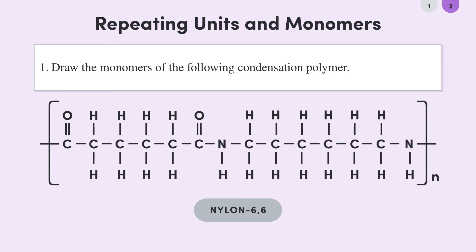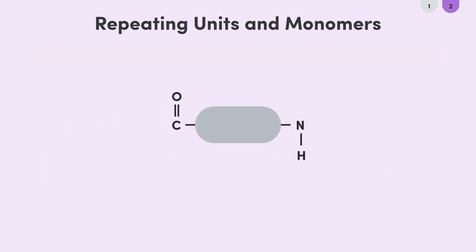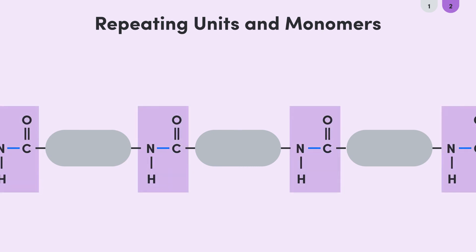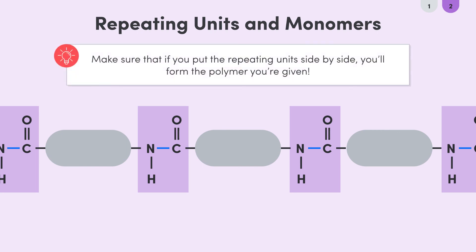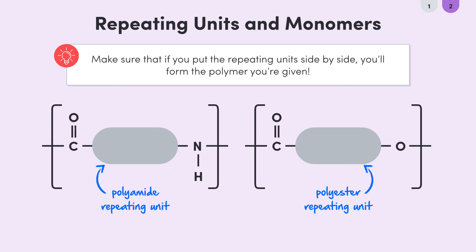Notice here that on one end of the repeating unit, we've got a CO carbonyl group, and the other end has an NH group. That makes sense because if we put multiple repeating units side by side and join them up, we get new amide group links. So this is a good hint — make sure if you put repeating units side by side, they'll form the polymer you've been given. To check that you've got the right repeating unit for a polyamide, make sure one end has the CO group and the other end has the NH group. And if it's a polyester, one end should have the CO group and the other end should just have a single oxygen.